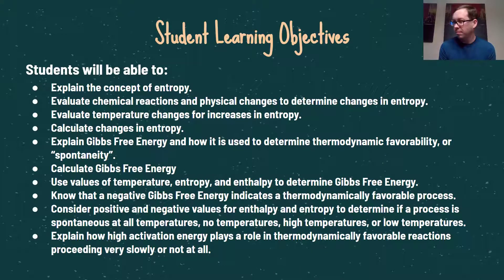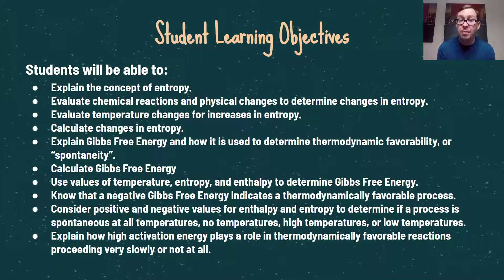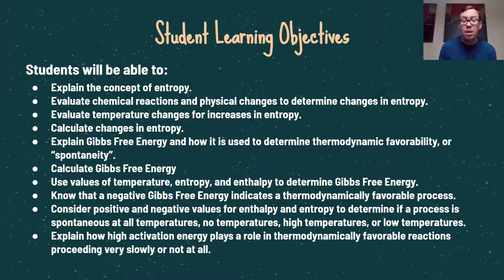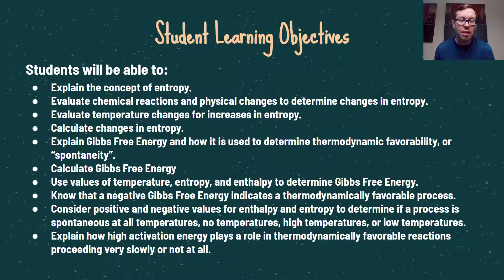By the end of this video, you should be able to explain the concepts of entropy, evaluate chemical reactions and temperature changes for increases or decreases in entropy, explain Gibbs free energy and how it's used to determine thermodynamic favorability, calculate it based on standard delta G values or temperature, entropy, and enthalpy, understand how the sign of delta G tells us whether a process is thermodynamically favorable, and understand how high activation energy can play a role in thermodynamically favorable reactions occurring very slowly or not at all.